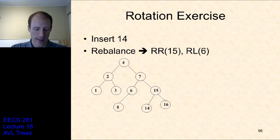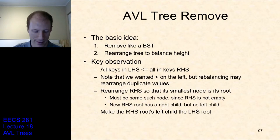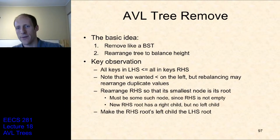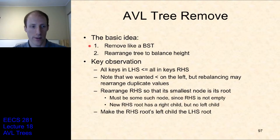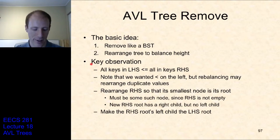Next up is remove. The idea with AVL tree remove is there are going to be two steps again: we do a remove just like a binary search tree, and then we rearrange the tree using rotations to balance the height. The remove part itself works just like a binary search tree — it's the rotations to fix balance that's going to be different.